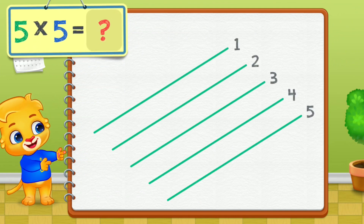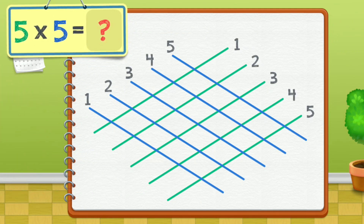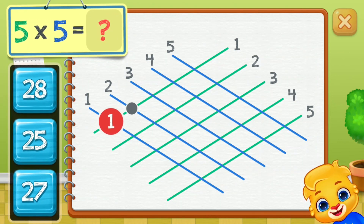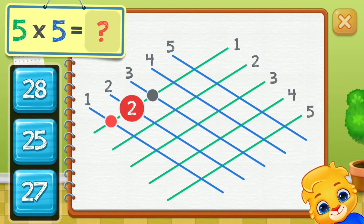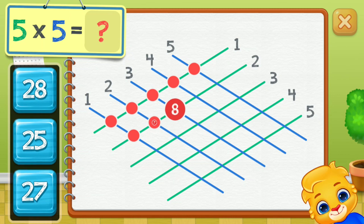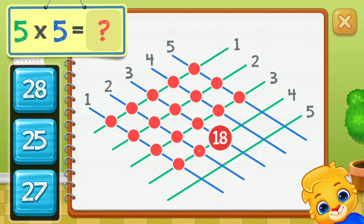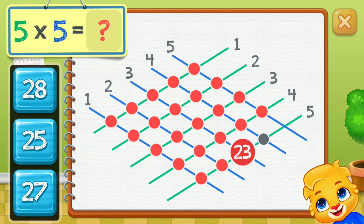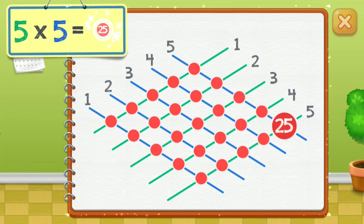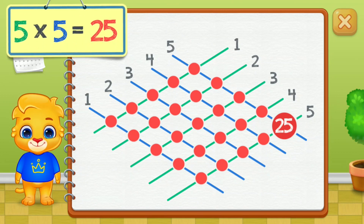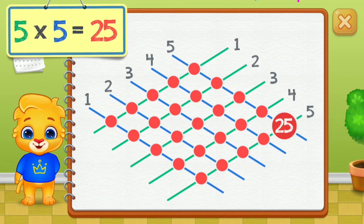Five times five equals... One, two, three, four, five, six, seven, eight, nine, ten, eleven, twelve, thirteen, fourteen, fifteen, sixteen, seventeen, eighteen, nineteen, twenty, twenty-one, twenty-two, twenty-three, twenty-four, twenty-five. Five times five equals twenty-five.